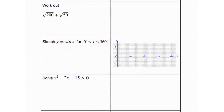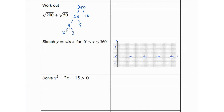In the second part, we're asked to work out √200 plus √50. Whenever we have surds being added with different numbers inside, our first step is to prime factorize those numbers and bring them down to their simplest form. We know 200 is 20 times 10; 20 is 4 times 5, and 4 is 2 times 2; and 10 is 5 times 2. So 200 has been split into its prime factors.